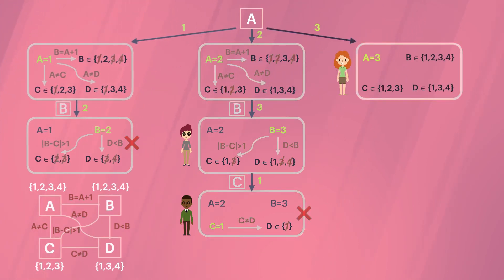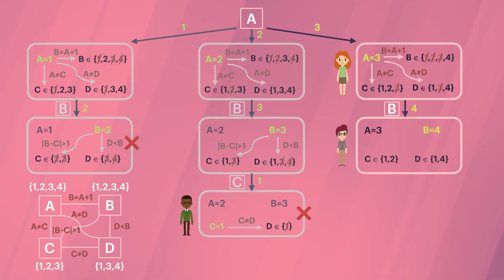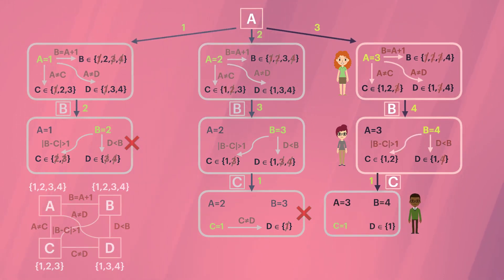Next, A equals 3, and forward checking leaves B just house number 4. But this time there are two values left for C. C equals 1 fails, but the second produces a solution.